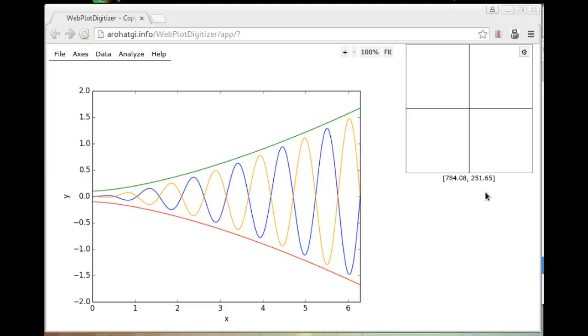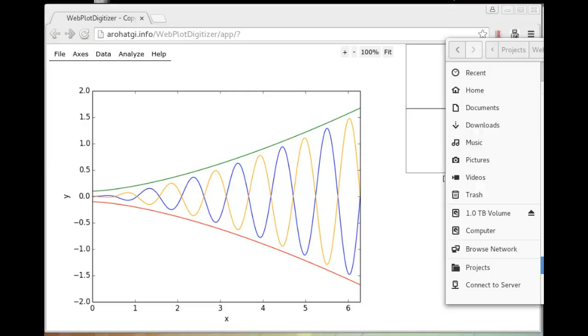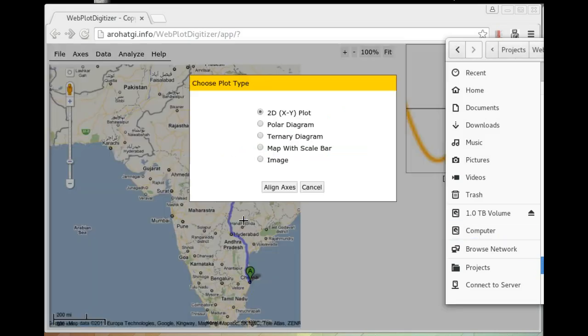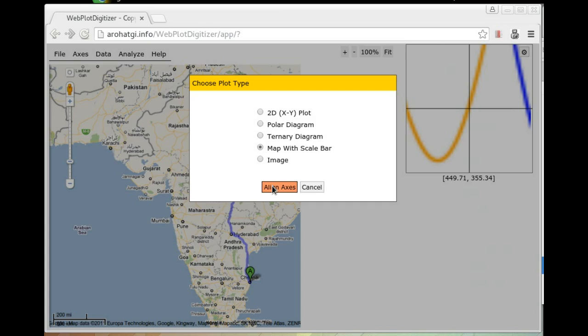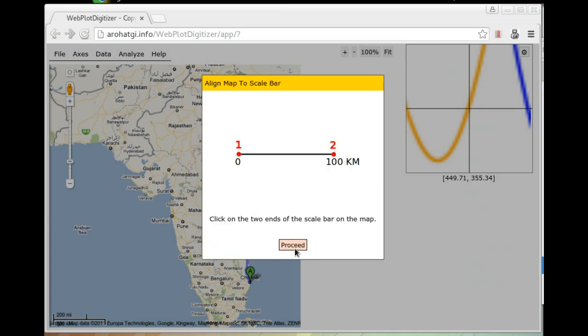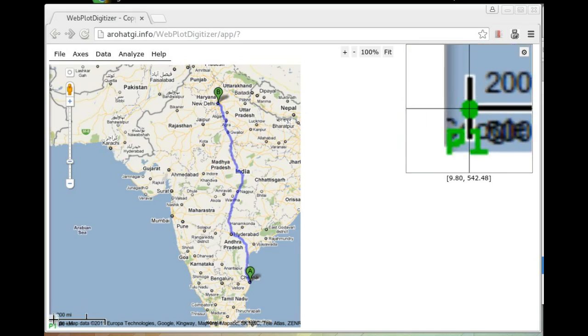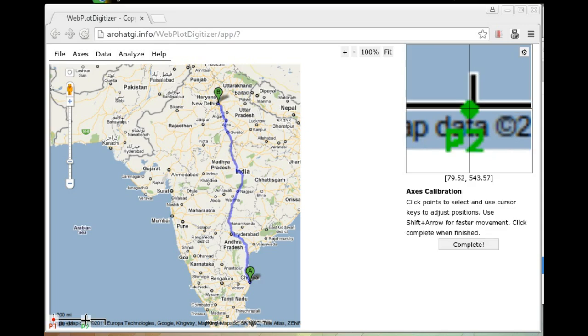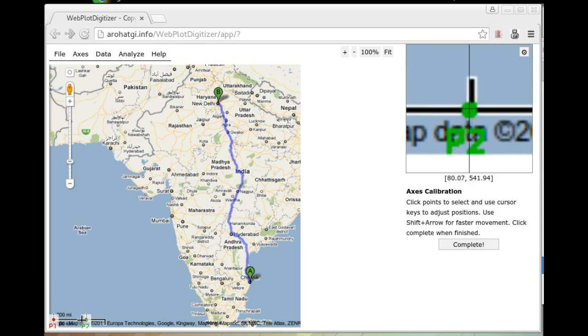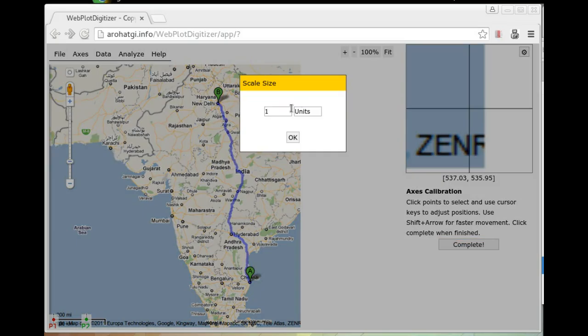I will now demonstrate the use of plot digitizer to do distance measurements on images. For the first example, I want to use a simple map. So click map with scale bar, align axis. Now you want to look for the scale bar and pick two points on this one and two. So in this case, I'm going to pick one here and one here, which is 200 miles as per the scale bar. Click complete. Now just type 200, 200. The units are optional, but let's put miles here.